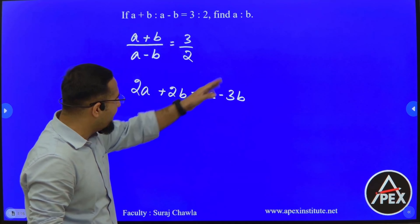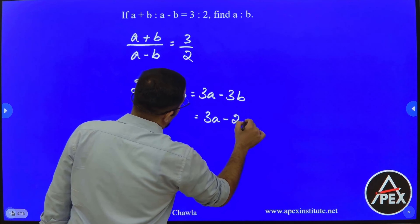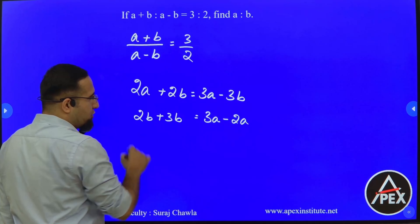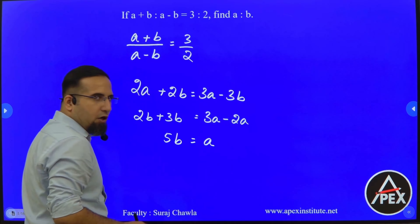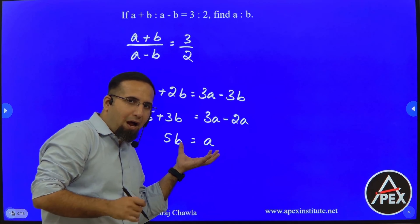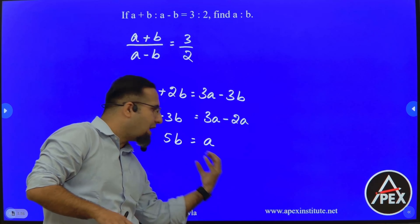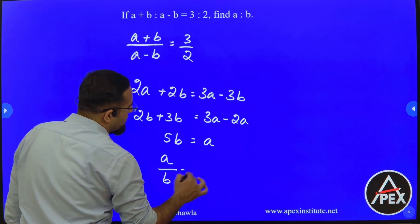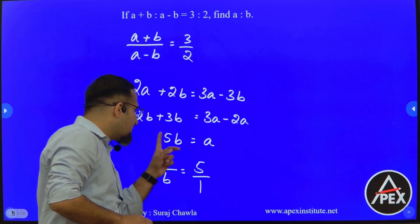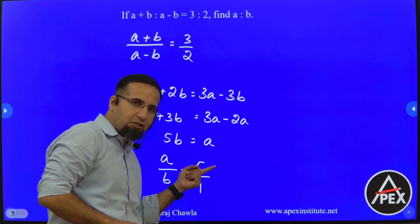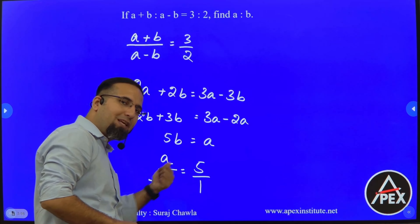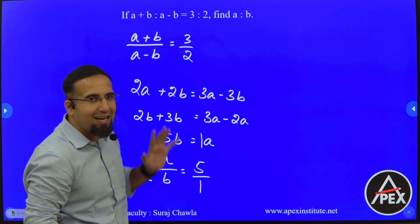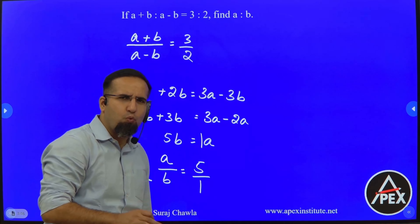Now if I transpose: bringing all A's to one side gives 3A minus 2A, and bringing B to the other side gives 2B plus 3B. So on my left-hand side I get 5B equals A. Since the equation has no constant, I can directly cross multiply to get the ratio of A is to B, which equals 5 is to 1. The 5 was multiplied to B, so it comes to the numerator, and 1 comes with A. Since the question directly asks for A is to B, the answer is 5 is to 1.